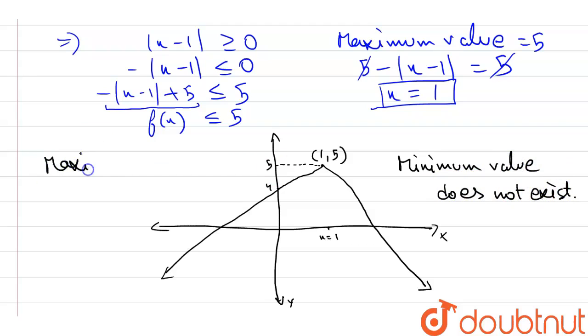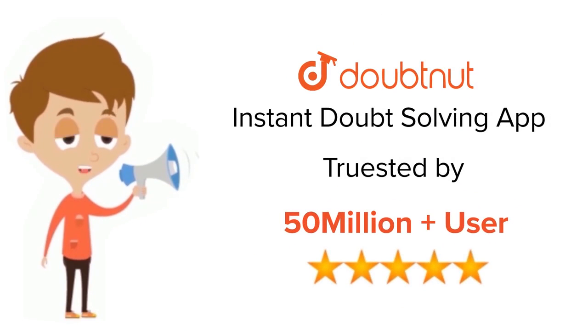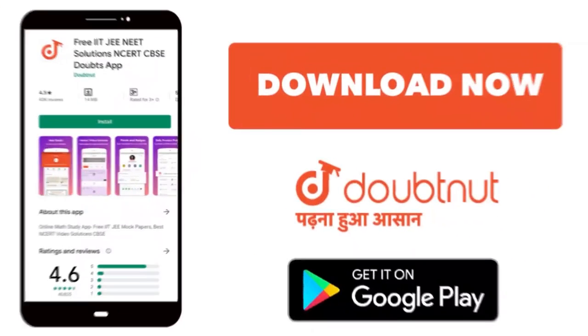The maximum value we have found is 5. That is the answer. For class 6 to 12, IIT-JEE, and NEET level, trusted by more than 5 crore students, download Doubtnut app today.